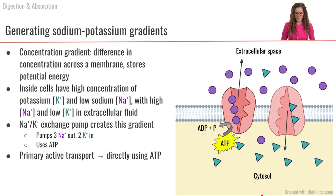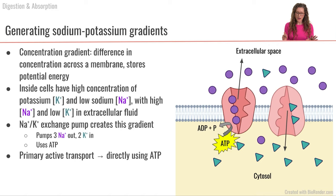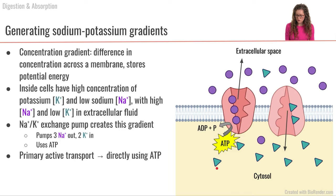A concentration gradient is a difference in concentration of a compound or ion across a cell membrane. When we have differences in concentration gradients, that is a way we store potential energy, because solutes strive for equilibrium across the membrane. In general, we have a higher concentration of potassium ions inside the cell — represented here as teal triangles — and a higher concentration of sodium ions outside the cell — represented as purple dots.